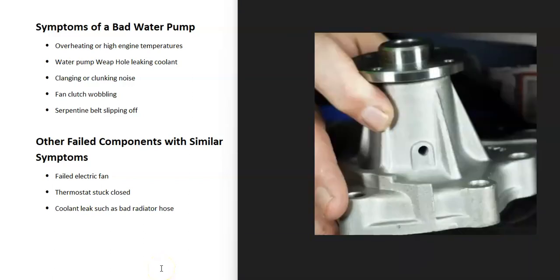The most common symptom of a bad water pump is that there's a small hole, usually located at the bottom of the water pump called a weep hole, that's going to be leaking out coolant. Sometimes it can be off to the side or at different locations, but most of the time it's located at the bottom.